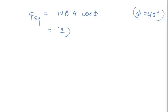So the value of N is 2, 2 loops are there. The value of B is μ₀I upon 16R, area is a², and cos φ is 1 by root 2.